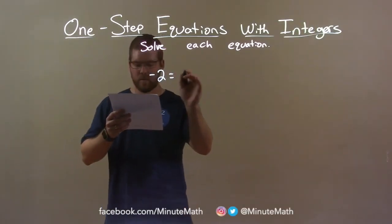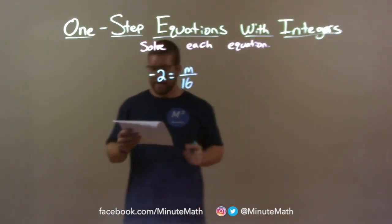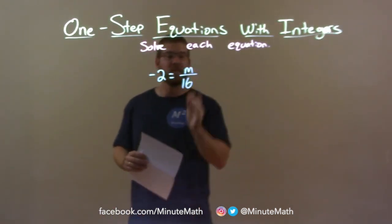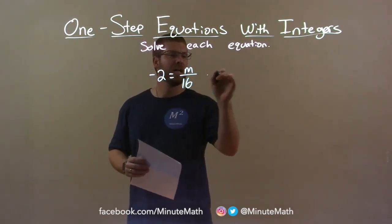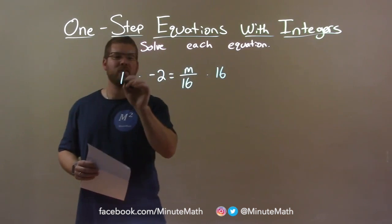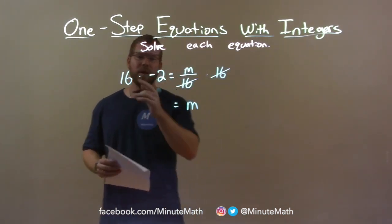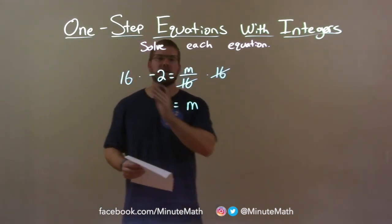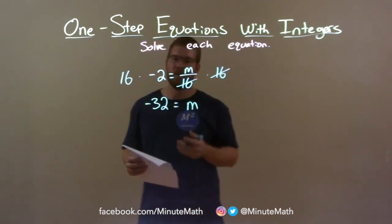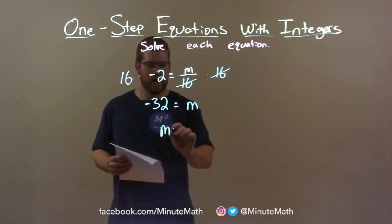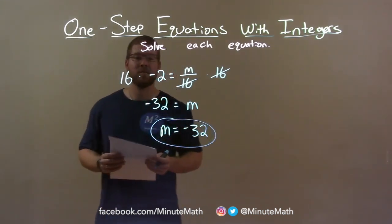Negative 2 equals m over 16. I want to get m by itself — it's being divided by 16. To get it to the other side, I need to multiply both sides by 16. That cancels out the division, leaving m by itself. But now I have 16 times negative 2, which is negative 32. So negative 32 equals m. I can rearrange it: m equals negative 32 is our final answer.